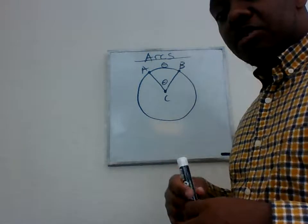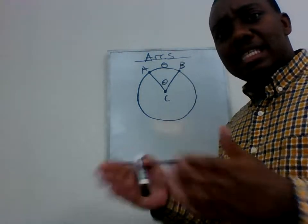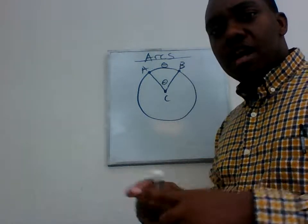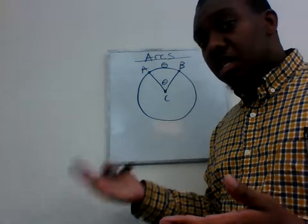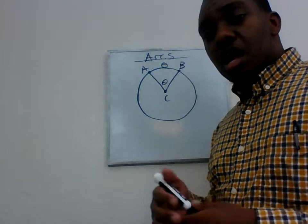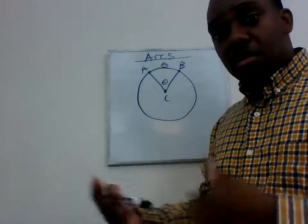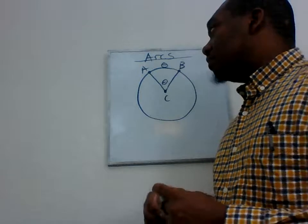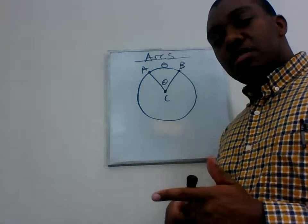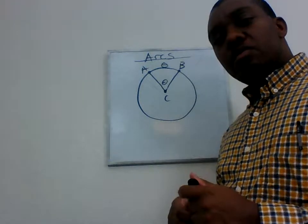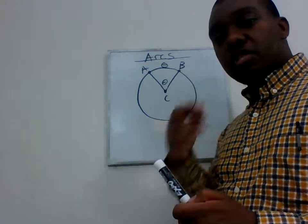The arc will have that same measurement as the central angle. However, we may want to know what that distance is in physical units — in meters, inches, feet, miles, and so on. But in order to do that, we would need to do some type of conversion.